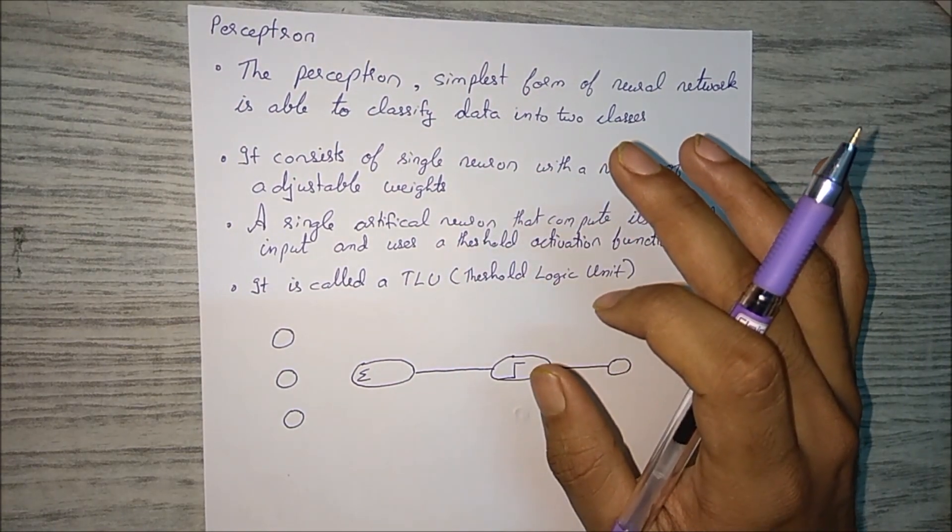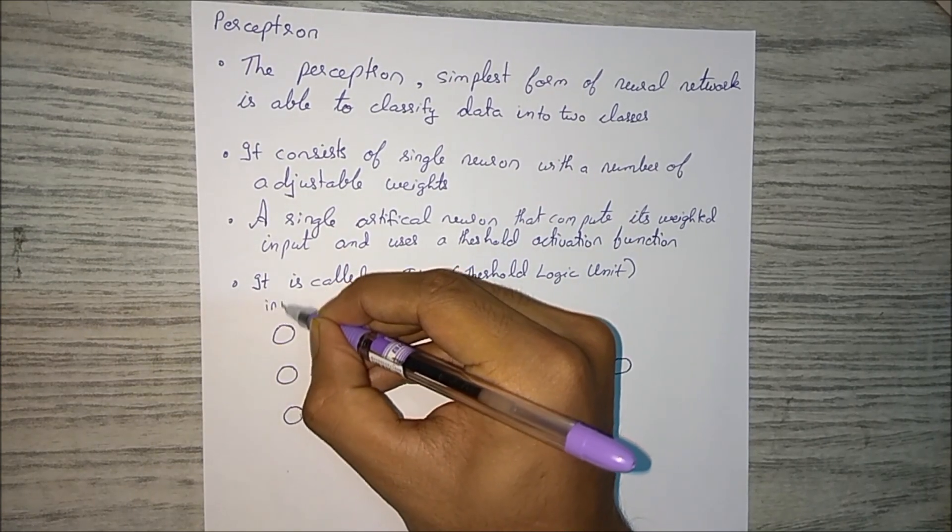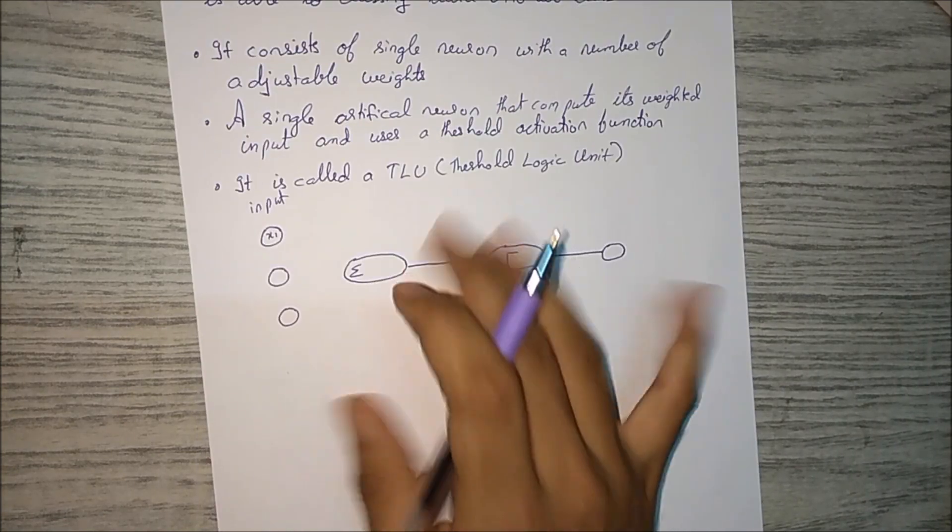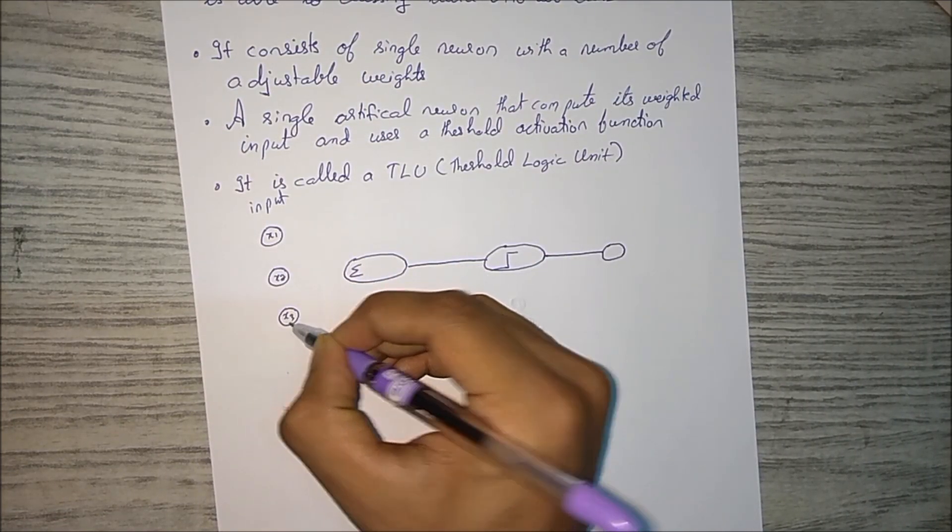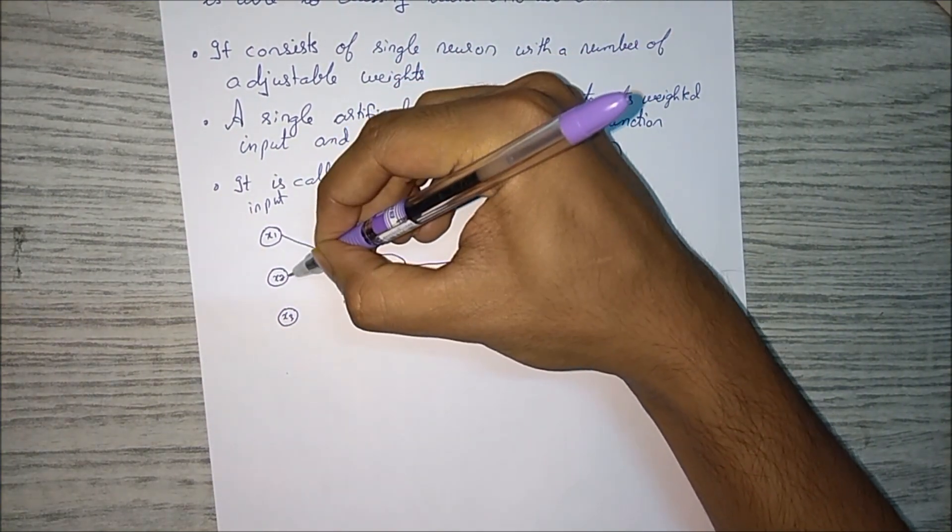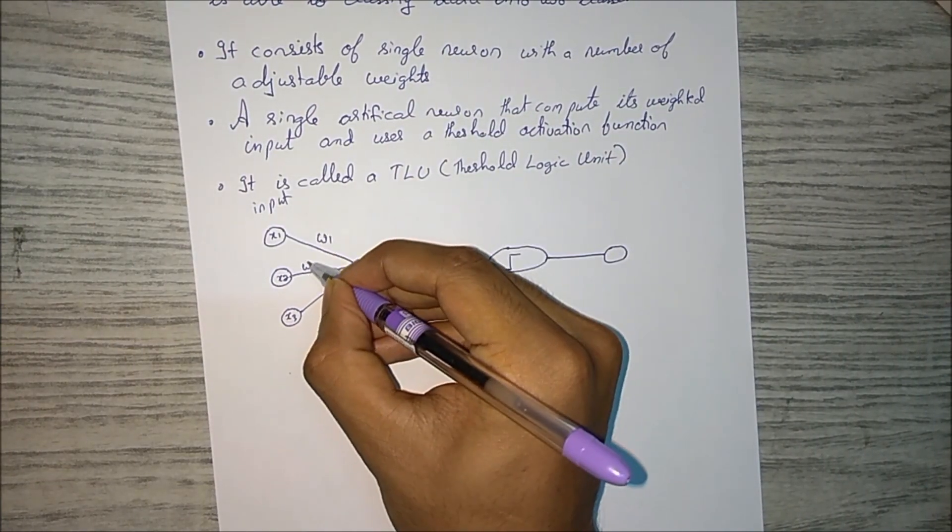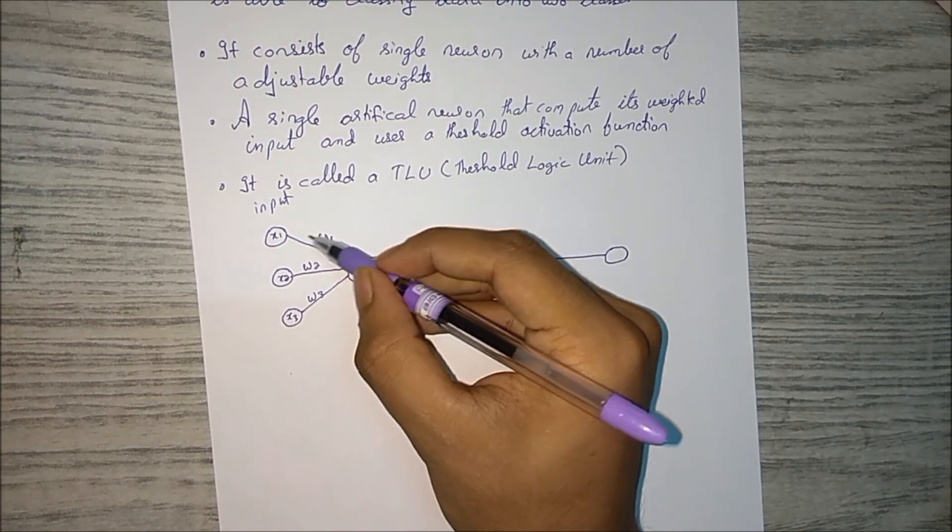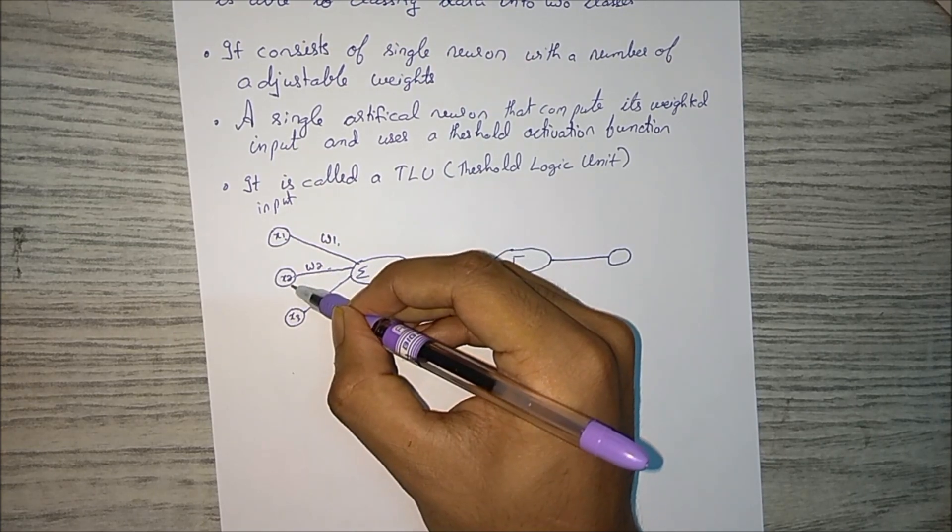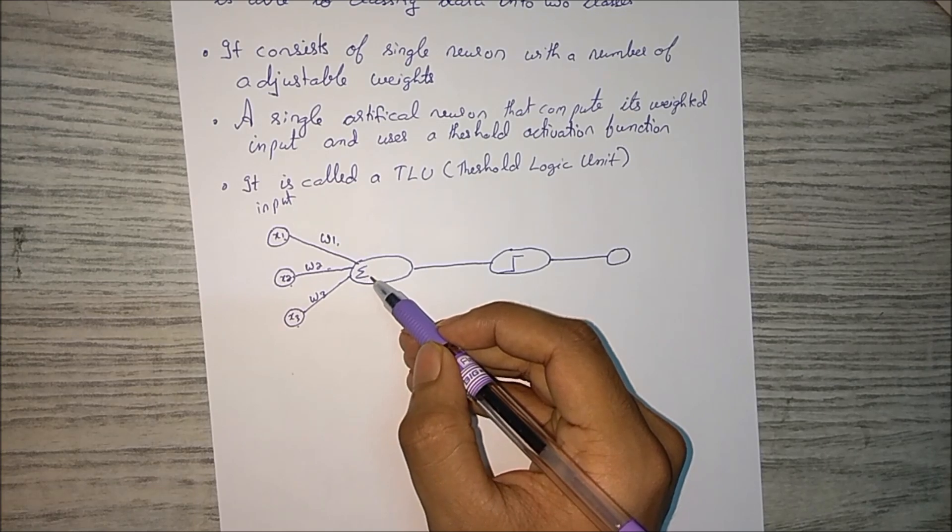So we will see what happens in perceptron. Let's say these are the input perceptrons - input. Let's say this is x1, this is x2, this is x3. This is w1, this is w2, this is w3. The w1 weight is attached to the x1, w2 weight is attached to the x2, w3 weight is attached to x3.